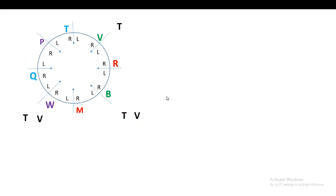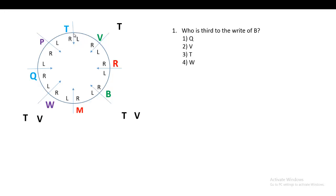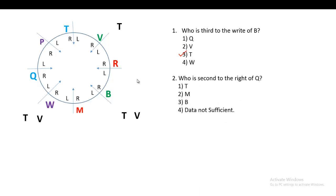The first question is: who is third to the right of B? Locate B on the diagram, then move three places in the anti-clockwise direction — first, second, and third. The answer is T. So the correct option is the third one.